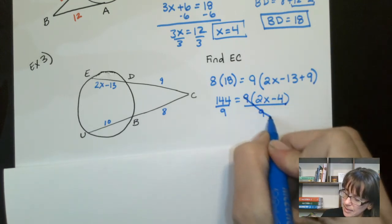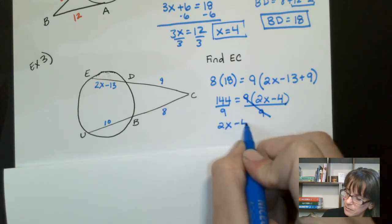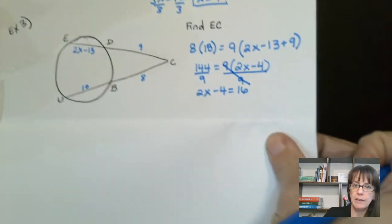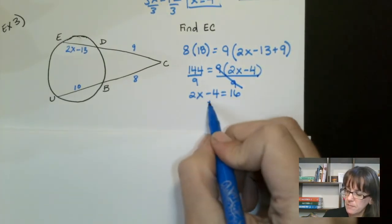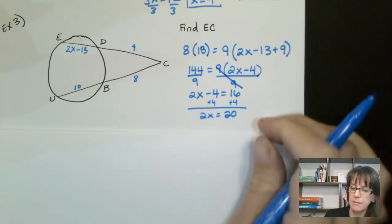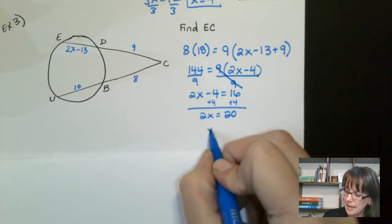So these guys cancel out. I'm left with 2X minus 4 equals 16. Okay. At this point I can add 4 to both sides and that will give me plus 4 plus 4. I get 2X equals 20, which means if I divide those by 2, I get X equals 10.